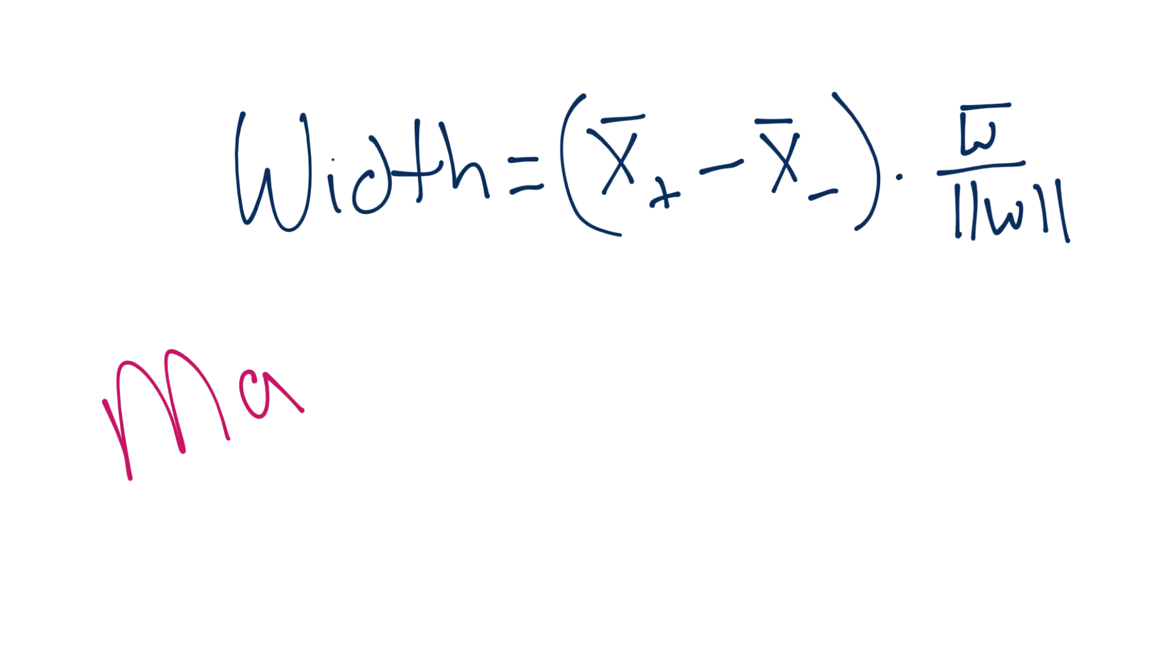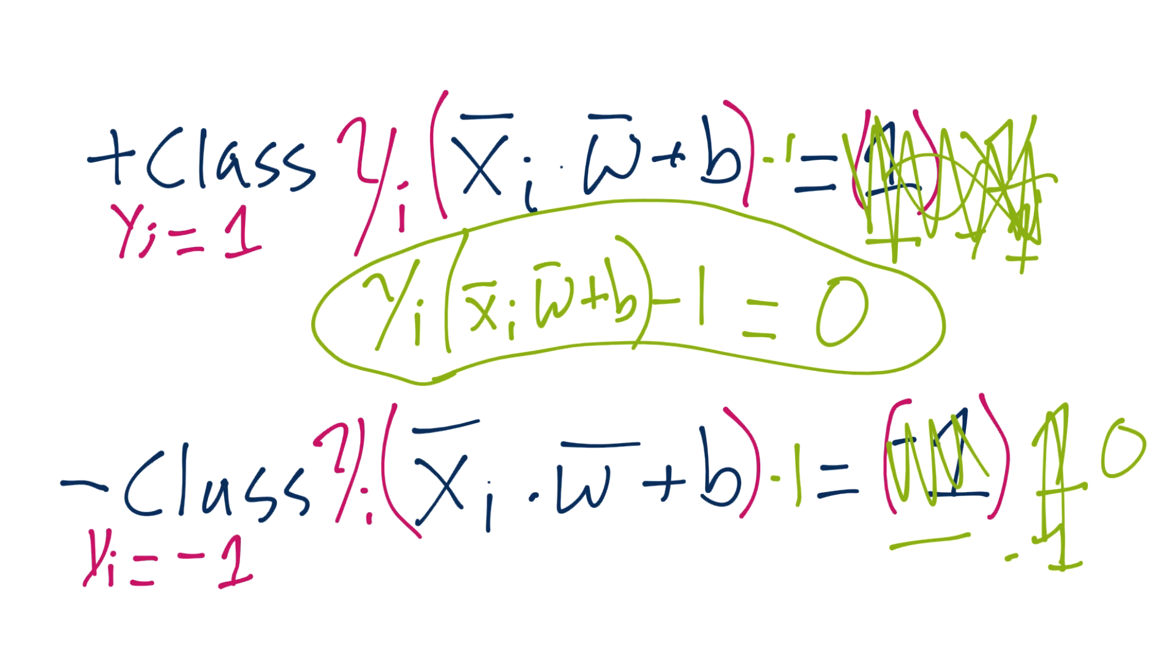So the equation for width equals x plus minus x negative, and these are the vectors, dotted with vector w over the magnitude of vector w. So again, what are we wanting to do here? We want to maximize this equation. And then what are the variables in this equation? Well, we've got of course, here, here, here, and here. But we actually already know what this and this are equal to because in the previous tutorial we worked out what the equation is for those values, right? For x minus and x plus, this is the equation that we're using. So pulling that down, we get, right? Remember, that's y sub i x i w plus b minus 1 equals 0.